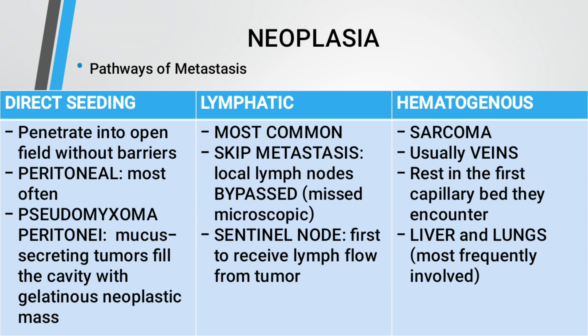The most common pathway is lymphatic spread. Tumors may skip metastasis of local lymph nodes. The first missed microscopic sentinel nodes are the first to receive lymph flow from the tumor. For hematogenous spread, sarcomas are mostly present in the veins; they rest in the first capillary bed they encounter, most often in the liver and the lungs.